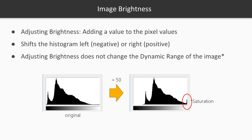This is not entirely accurate since any pixel values that are shifted beyond the maximal gray value are clamped or saturated to 255. This is called saturation, overexposure, or flushing, and should be minimized since actual image data is lost in those pixels.